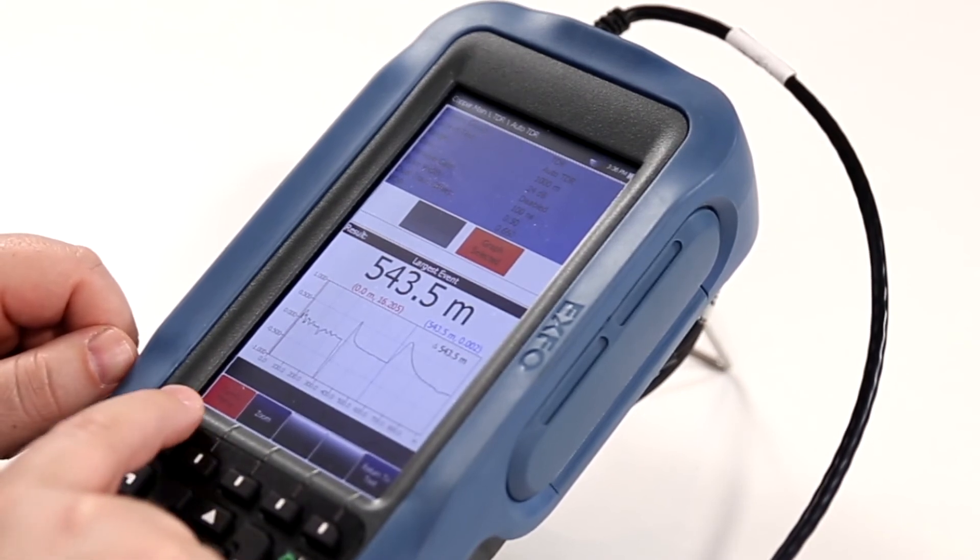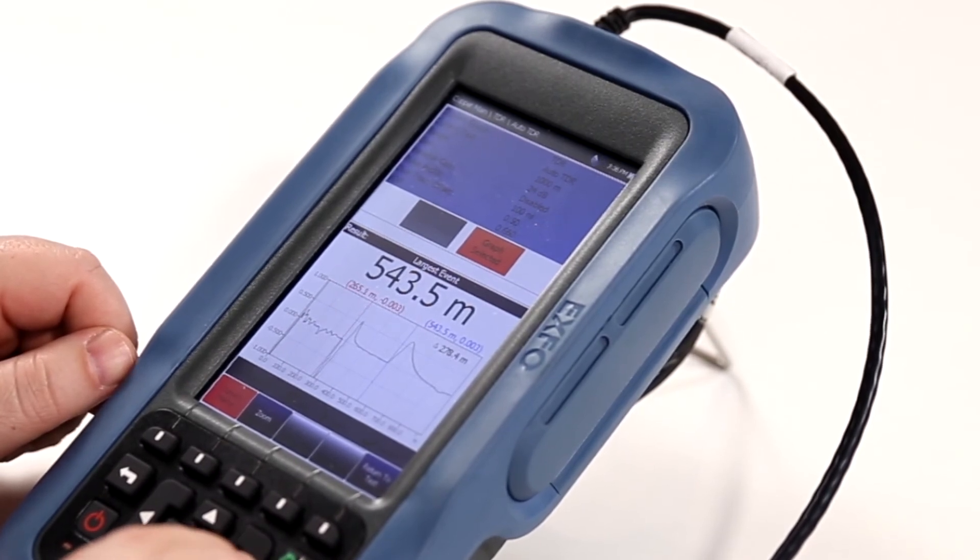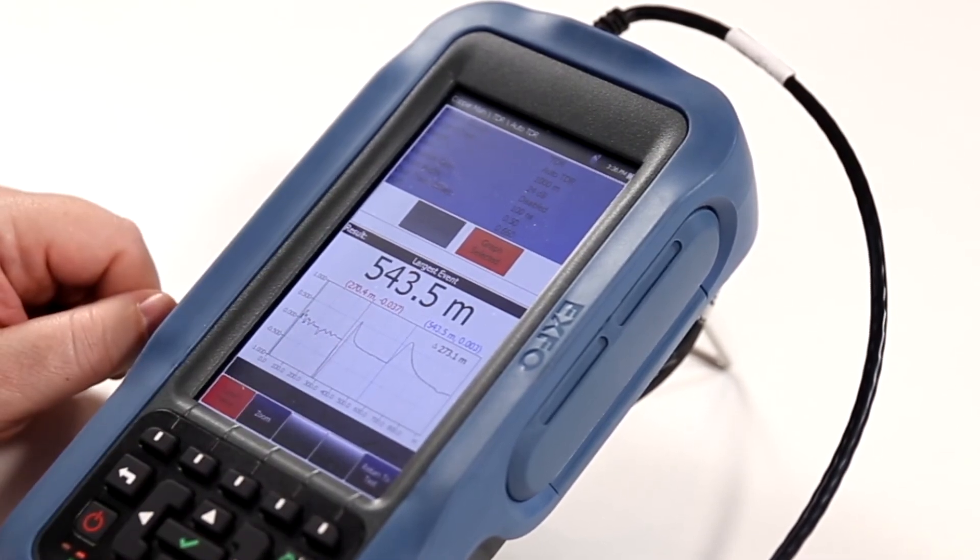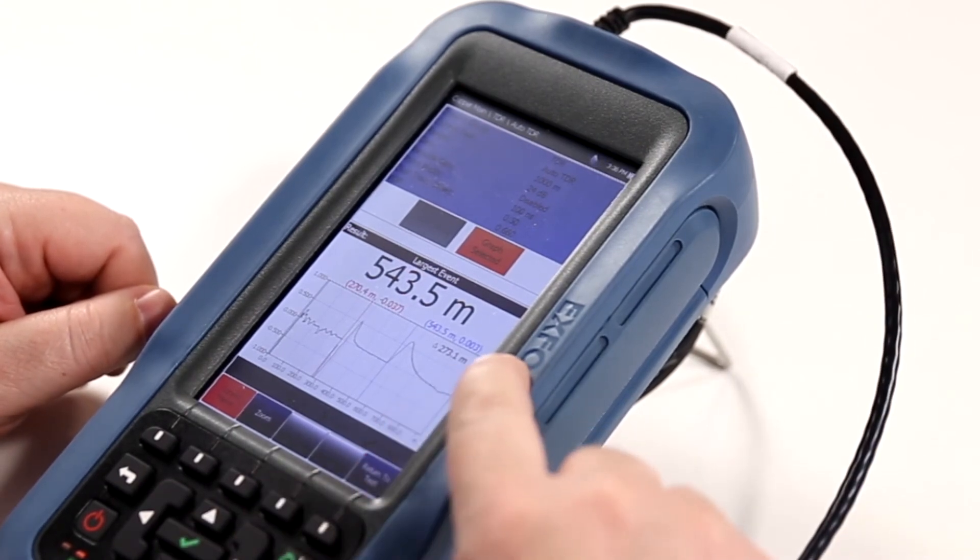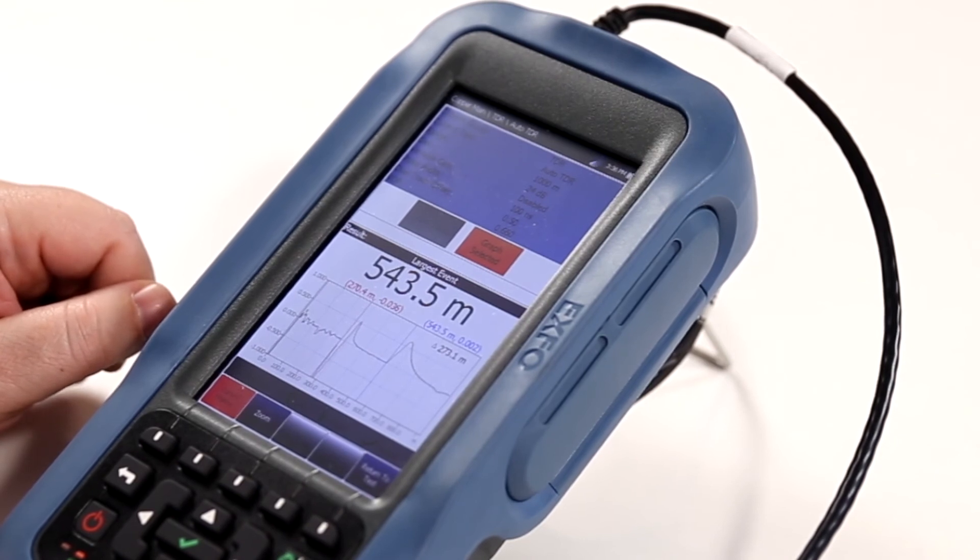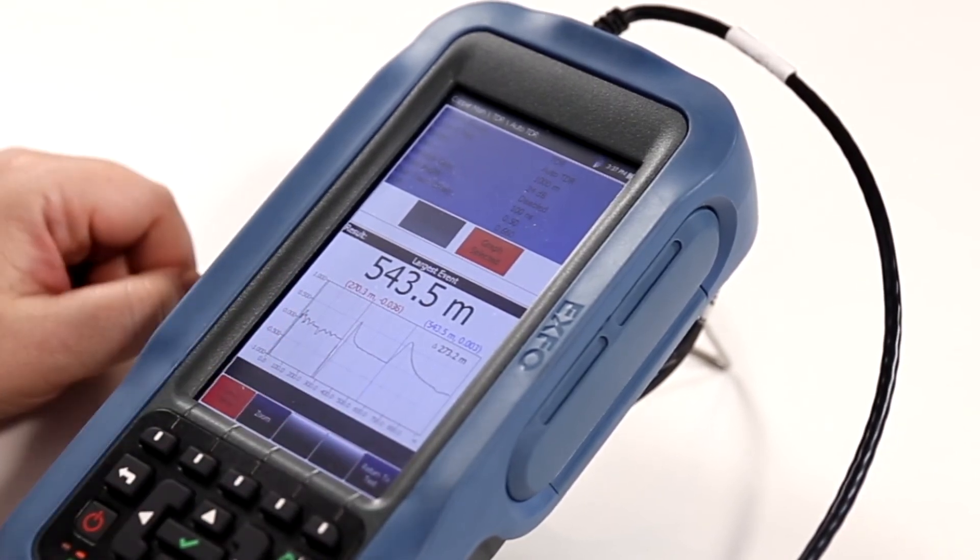If we change it to marker and move the marker from the zero point and move it over to the start of the bridge tap, we will be able to see that the marker is at 270 meters. The MACS tester will also identify to you the delta between those two points. In this case, 273 meters between the start of the bridge tap and the end of the cable.